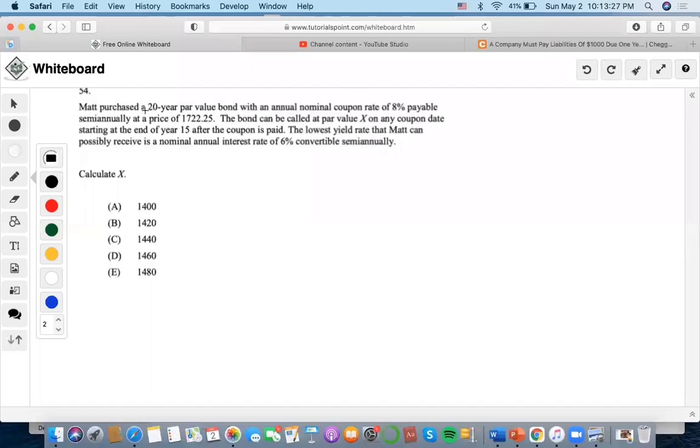So for this problem: purchased a 20-year bond, 8% semiannual, with the price of $1722.25. They're talking about bonds and laid out a price, so we need to use the bond pricing formula.